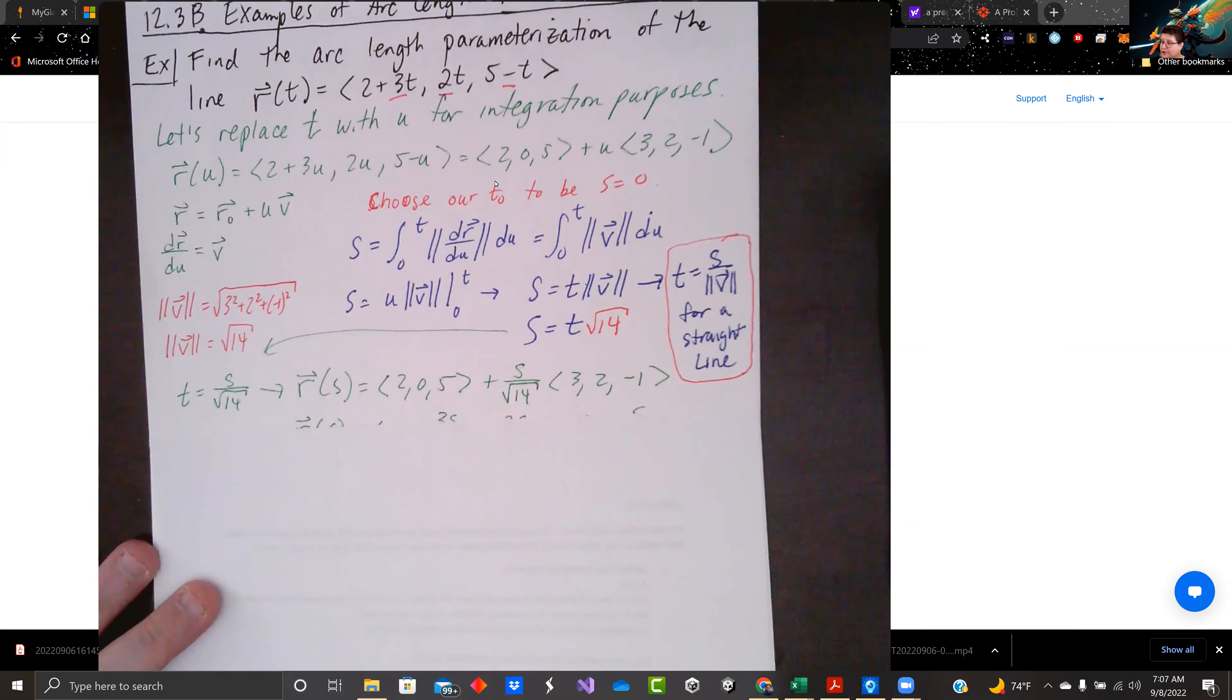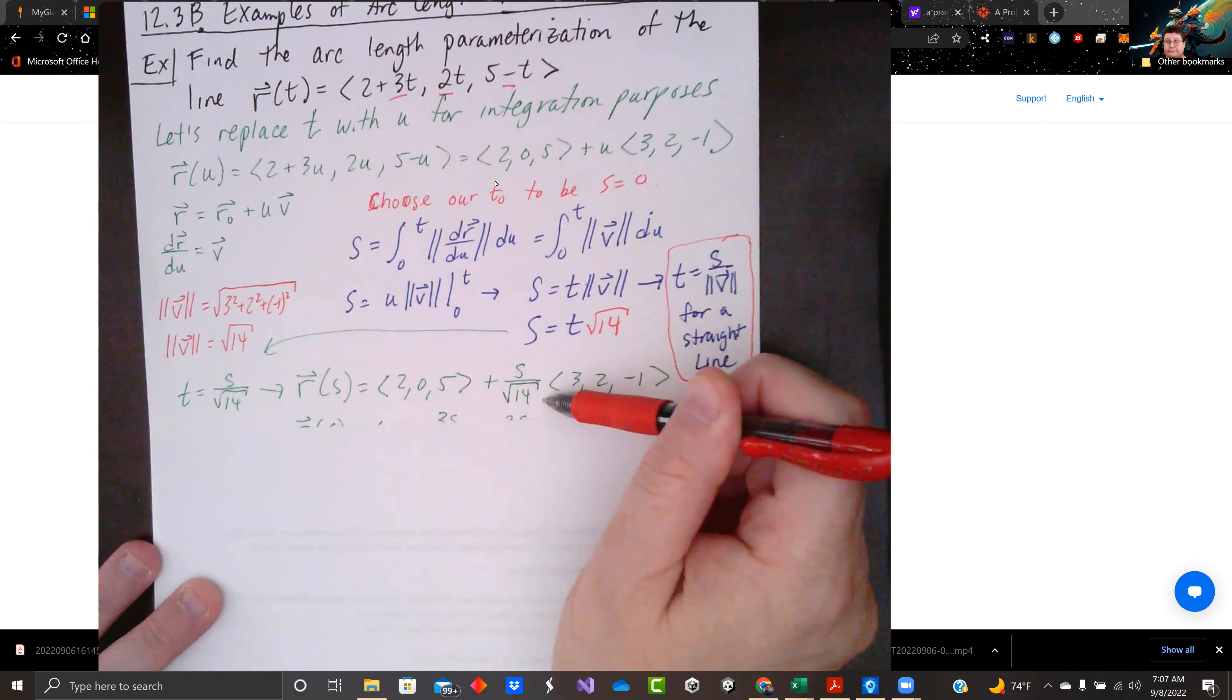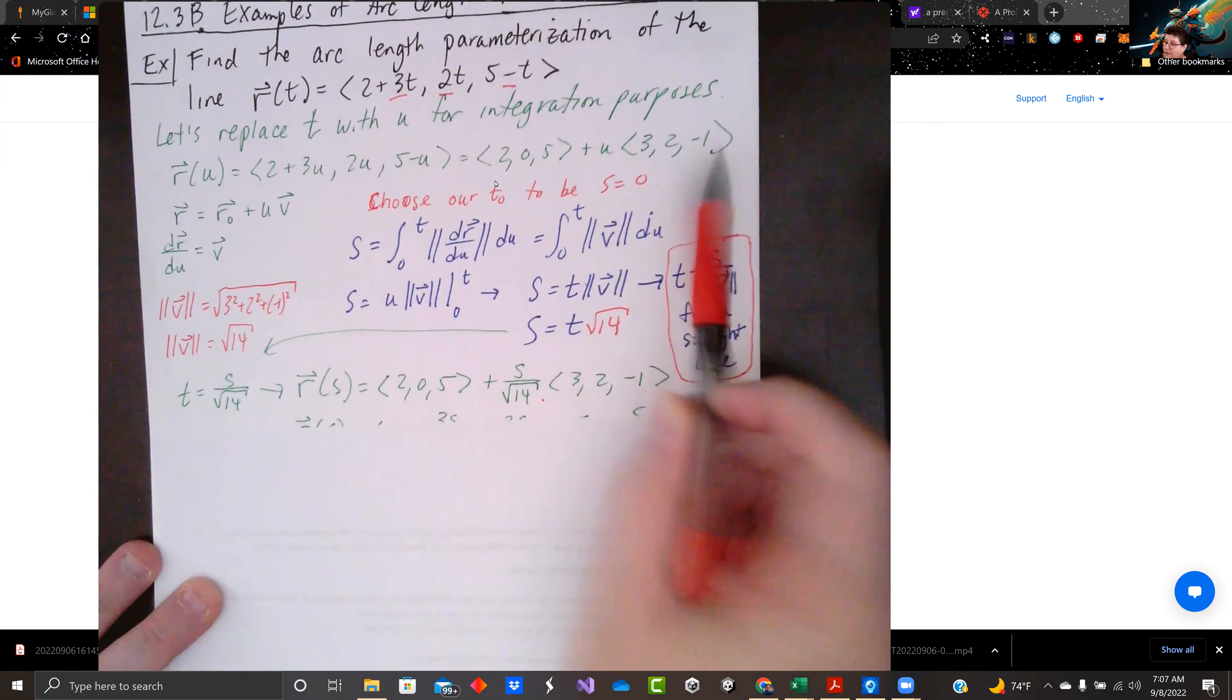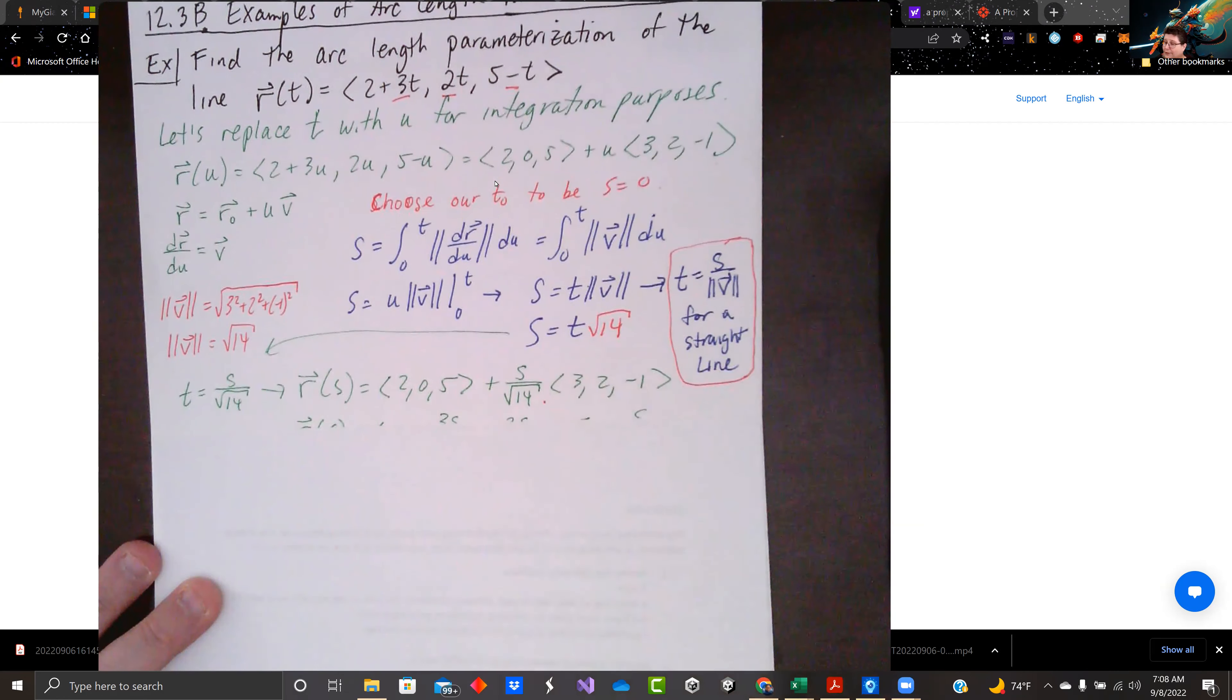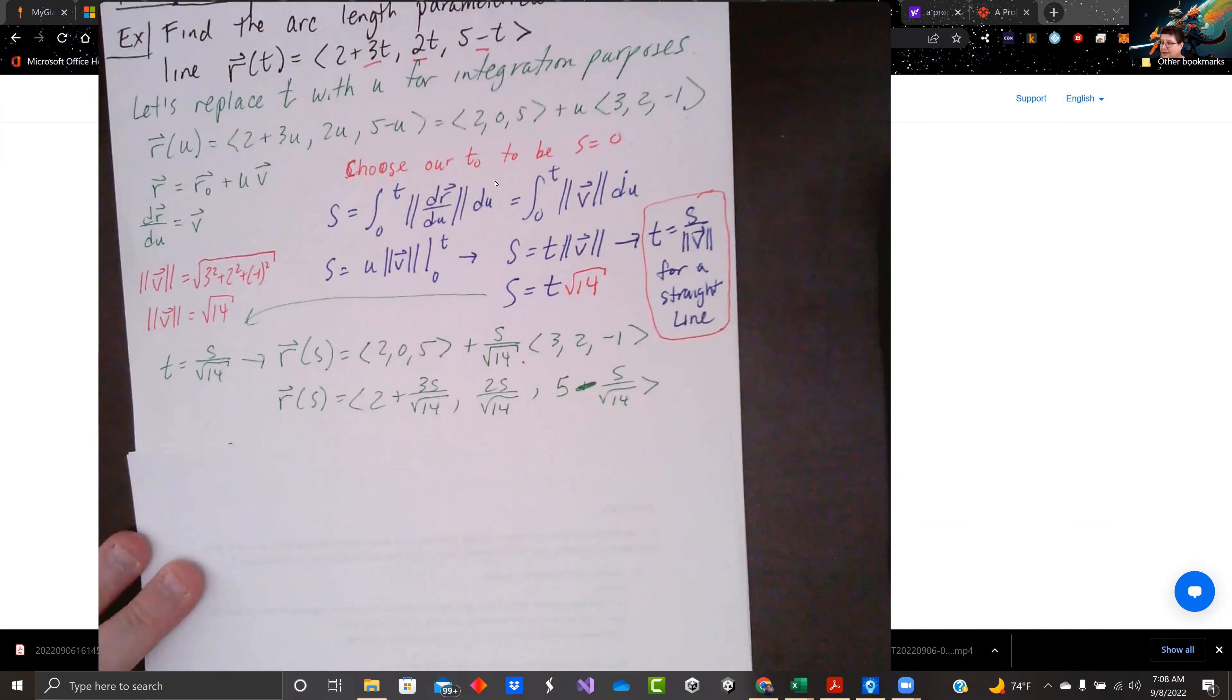So r(s), we just change it. We're subbing out t for s over root 14. This would otherwise be the same formula we have up here. Just t is now s over square root of 14. And we pass it out. And there we go. Combined into one vector. Done.